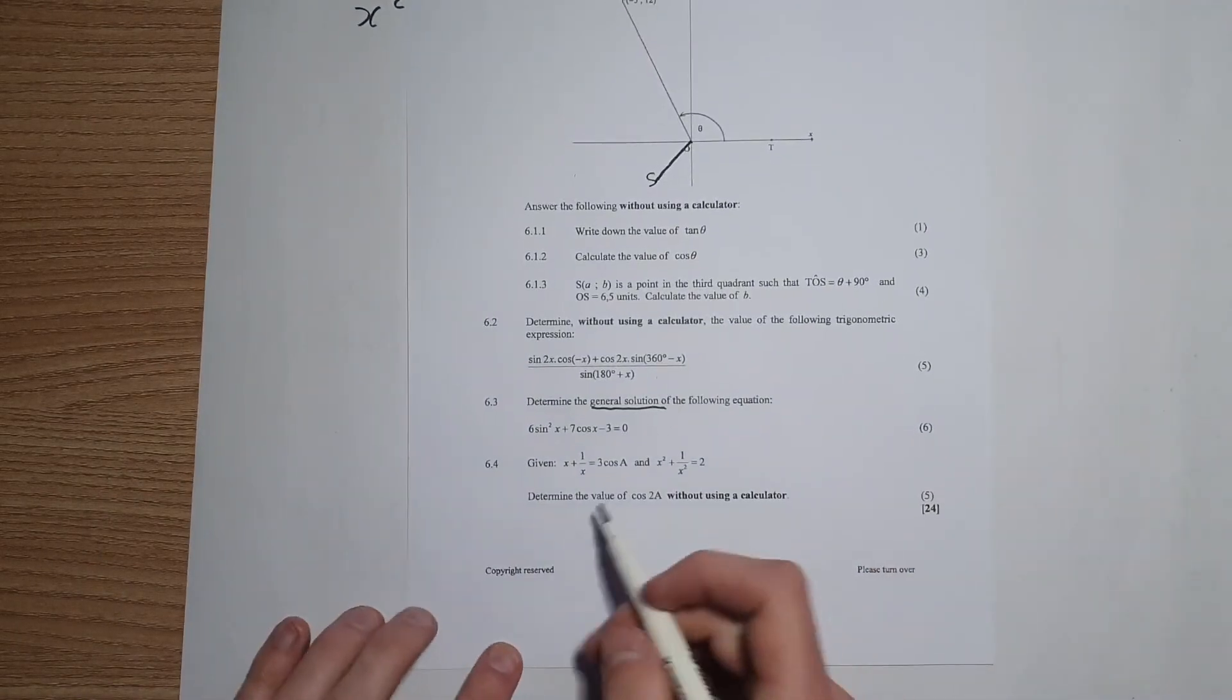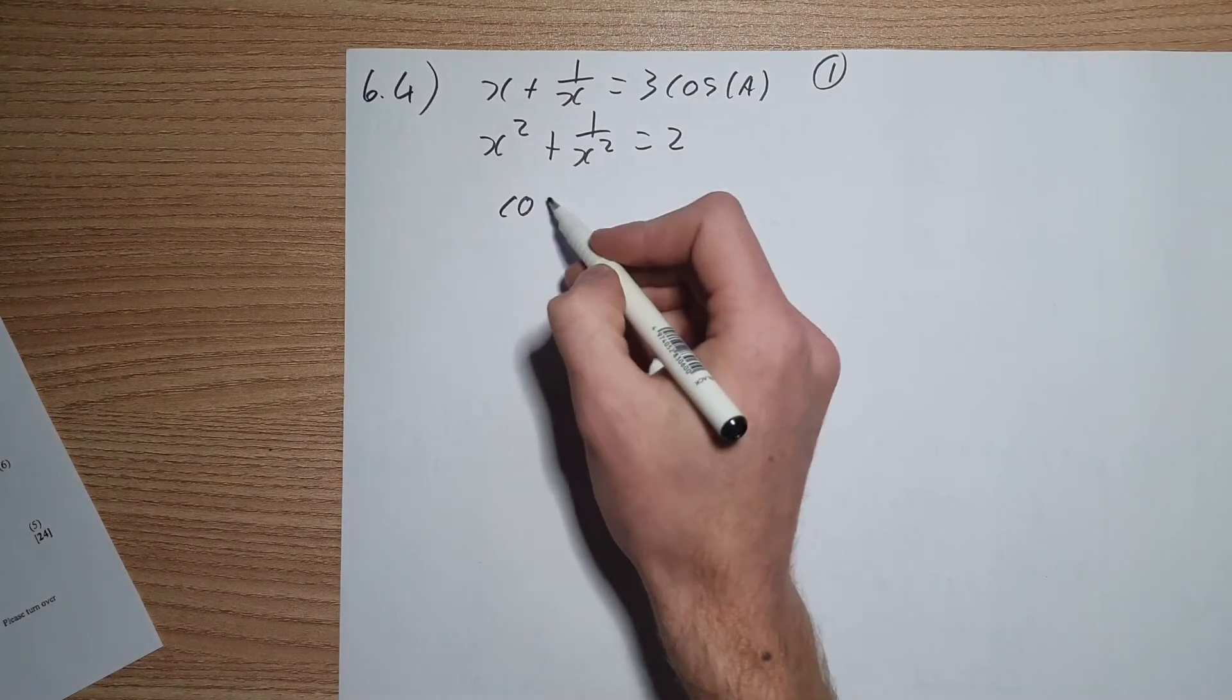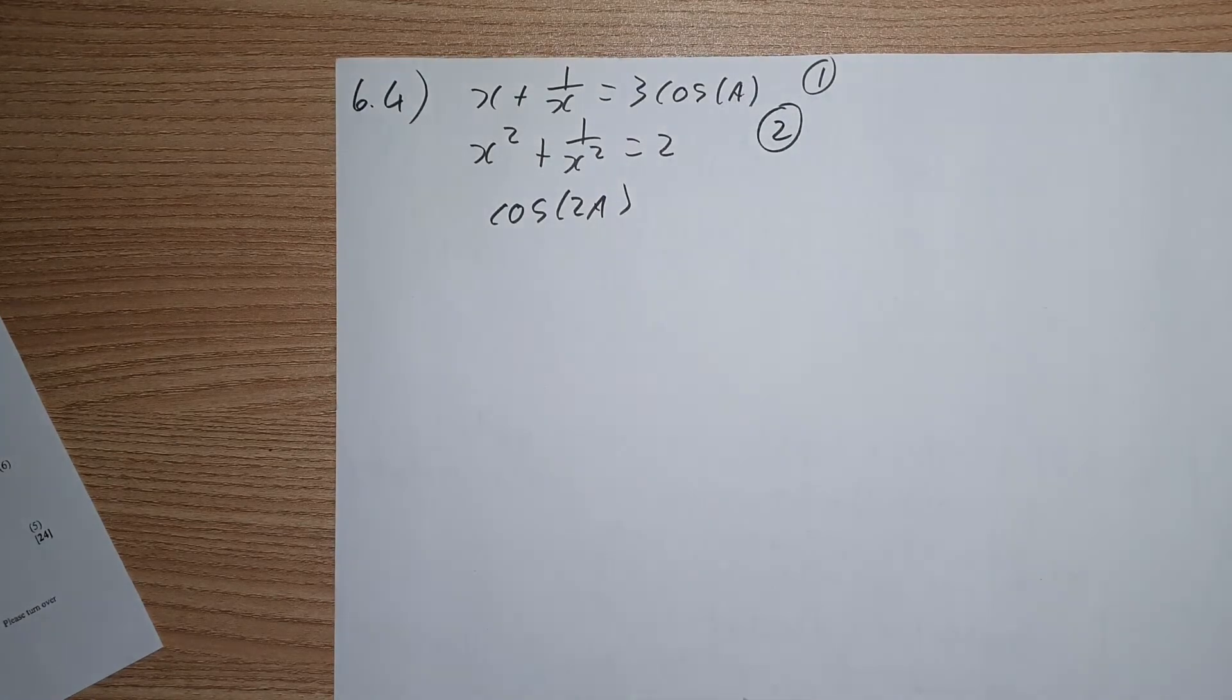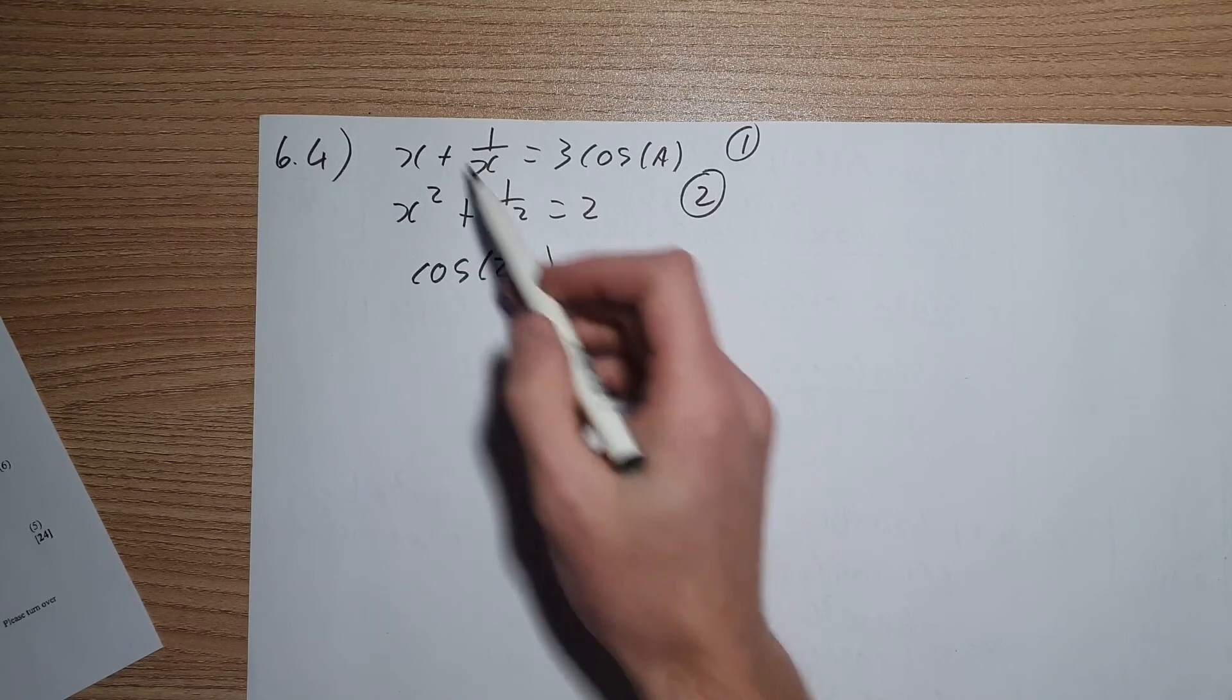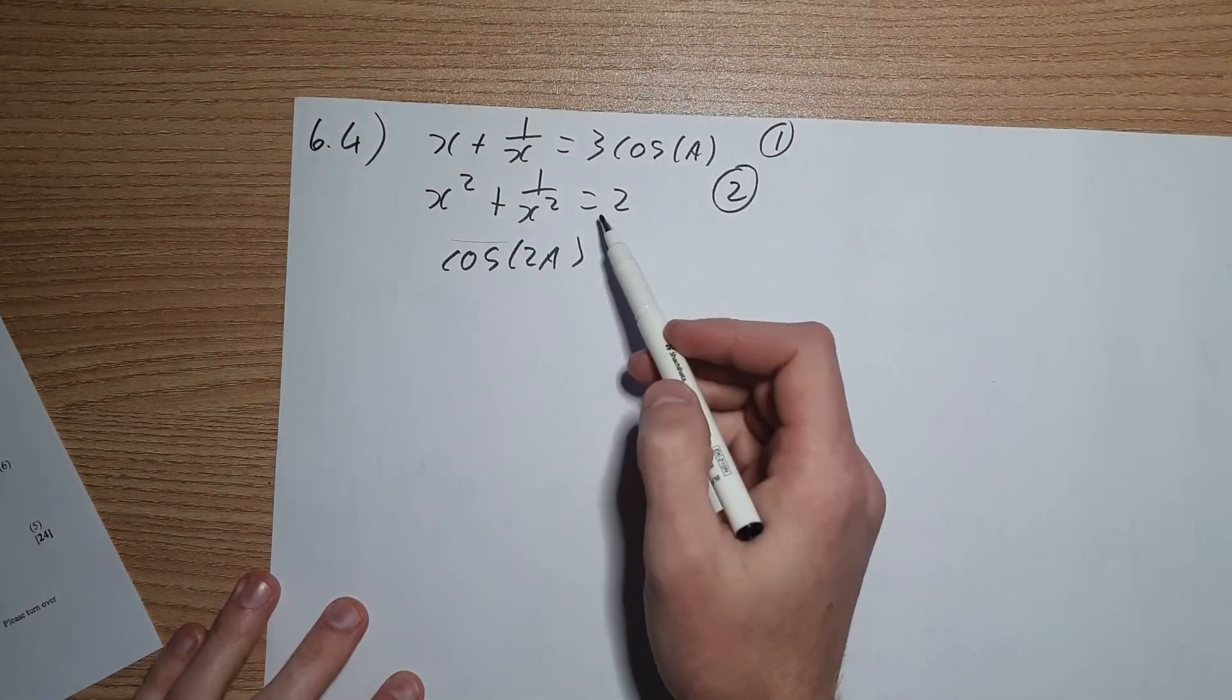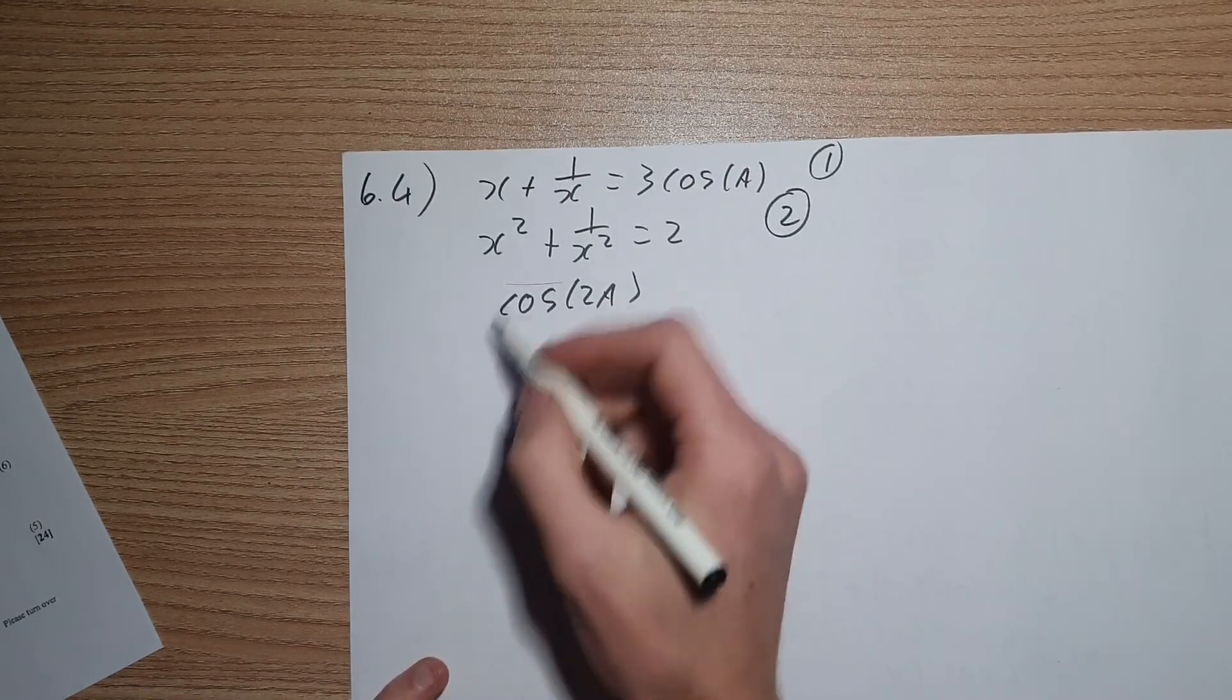Now the last question, question 6.4 says, given the two expressions over here, without a calculator, let's determine what cos 2a is. So we're looking for cos of 2a. Now there are multiple ways about going about this, but I'm going to show you how to approach a question like this. So we've been given an expression with cos in, and we've been given an expression over here with x in. This one's also got x in. So we can do a sort of a simultaneous equation. I'm going to use 2, and I'm going to solve for x, and then I'm going to plug it into 1, and see what I get, see if I can get somewhere close to this over here.